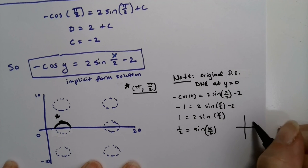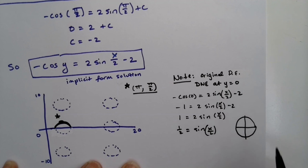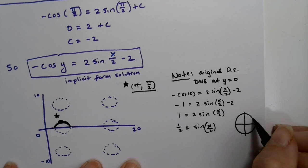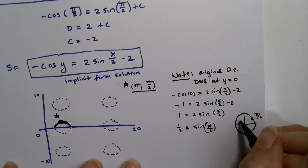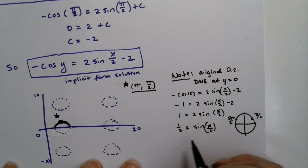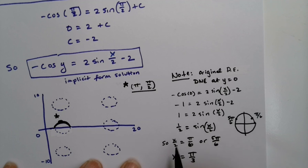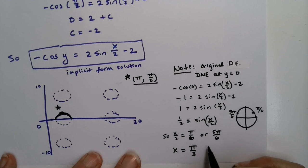What angle has a sine value of a half, a y value of a half? So that'd be π over six and five π over six. So that means that this angle, x over two, has to be equal to π over six or five π over six, which means that x itself is π over three because you multiply both sides by two, or five π over three.